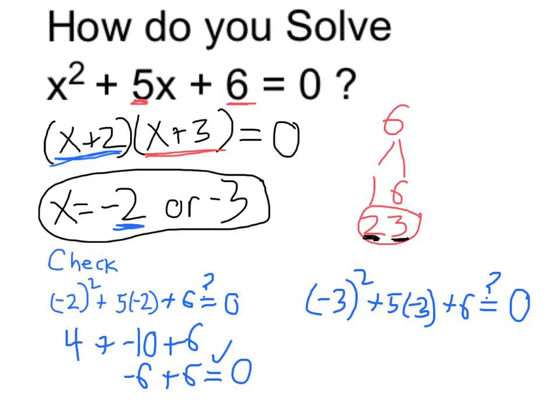And the other one, negative 3 times negative 3 is, I'm sorry, is a positive 9. So you have positive 9 plus negative 15 plus 6. Is that equal to 0? Well, 9 plus negative 15 again is negative 6. And negative 6 plus this 6 is equal to 0. So the negative 3 solution works as well.